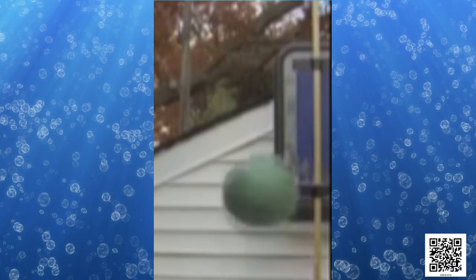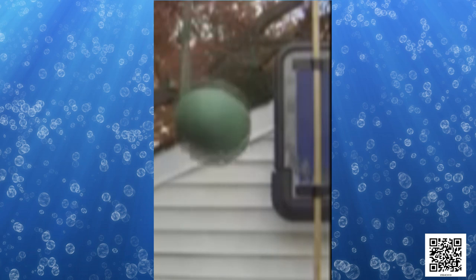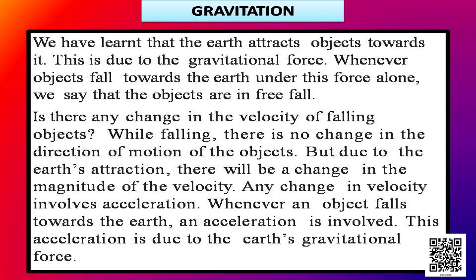It reaches up to a certain height. After that, without any delay, it tries to come down to the earth's surface freely. This is called free fall. We have learned that the earth attracts objects towards it due to gravitational force. Whenever objects fall towards the earth under this force alone, we say that the objects are in free fall.